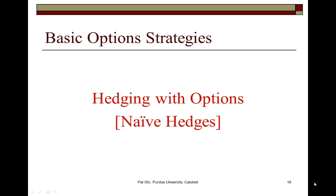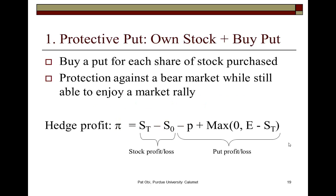In this second part of basic option strategies, I'm going to show two examples of how to hedge with options. These are naive hedges because they are one-on-one positions, meaning one share of stock is hedged with one call. As you'll see, they do not necessarily lead to a perfect hedge where the loss in one position is exactly offset by the gain in the other.